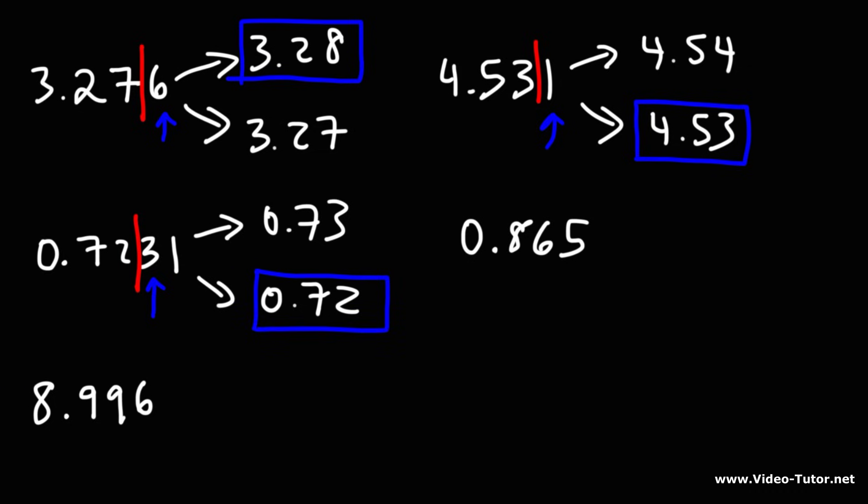Now, what about 0.865? Well, let's put a line after the 6, after the hundredths digit. And either we round it down to 0.86 or round it up to 0.87. So looking at the digit to the right of the 6, that's a 5. If it's 5 or more, we need to round up. So this is going to be 0.87.